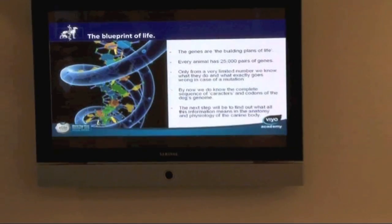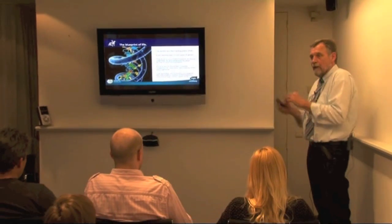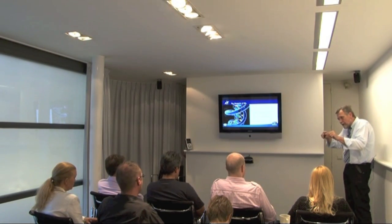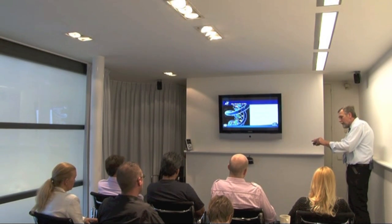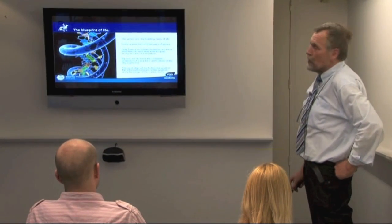But that's not where we are now. At this moment, we know the complete sequence of characters and codons of the dog genome. So at this point in time, we have that enormous list of genetic codes that every dog carries and transfers to the next generation. The only problem is that for most of that genome, we don't have the slightest idea what is coded and how it's translated — from the building plan to the chain of enzymes, the protein, the enzyme, and then to the function in the body. So the next step will be to find out what all this information means in the anatomy and physiology of the canine body.